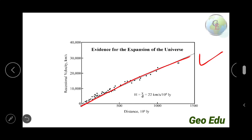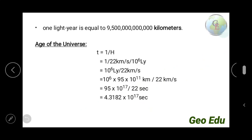When he calculated the slope of the straight line, he got the value of Hubble constant, that is 22 km per second per 10 to the power 6 light year. One light year is equal to 95 into 10 to the power 11 kilometers.